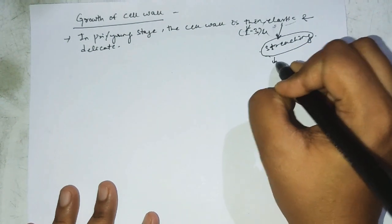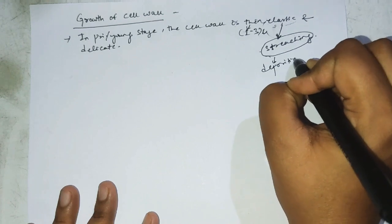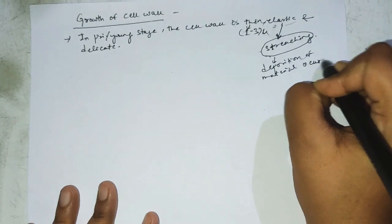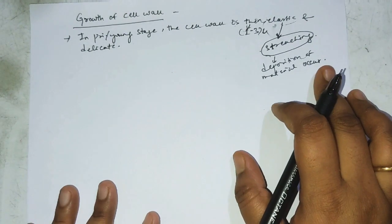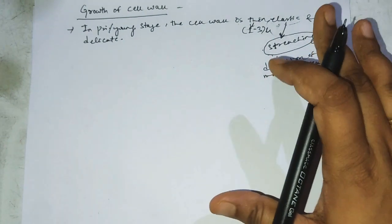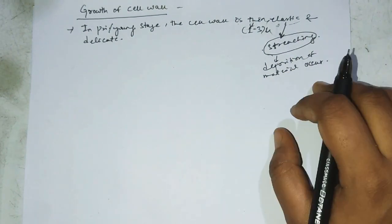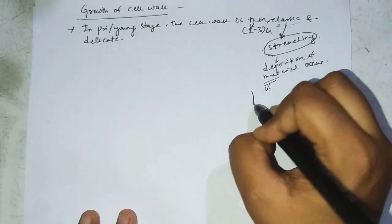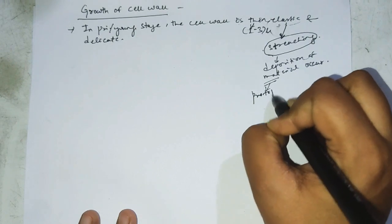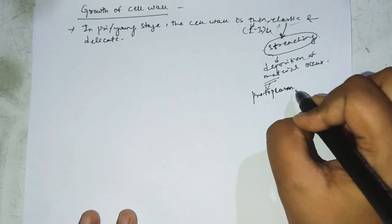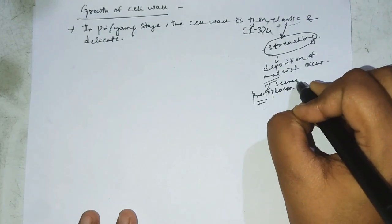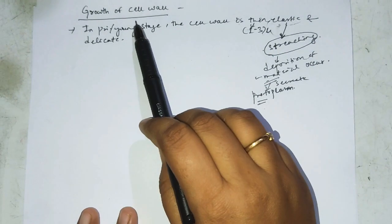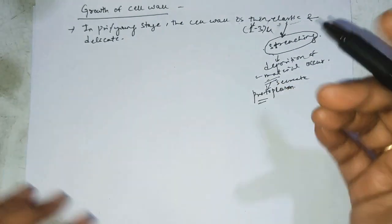Due to stretching, deposition of material occurs in the cell wall. This material is secreted by the protoplasm. Remember, the protoplasm secretes material that gets deposited on the cell wall.